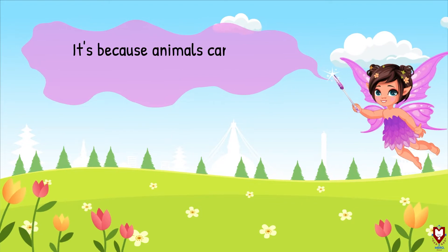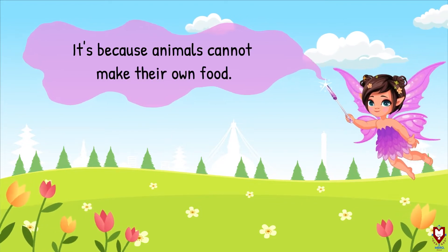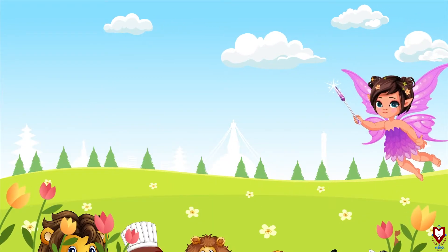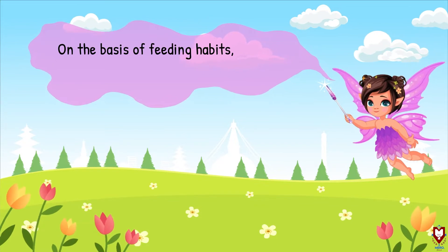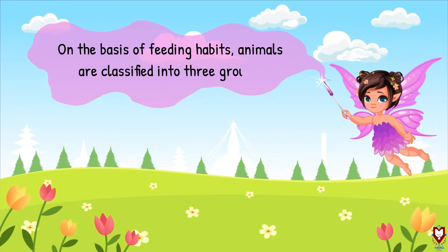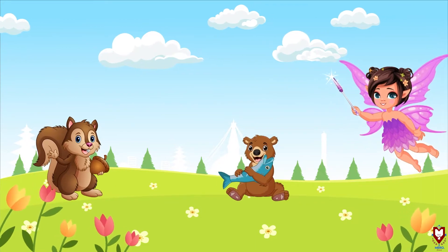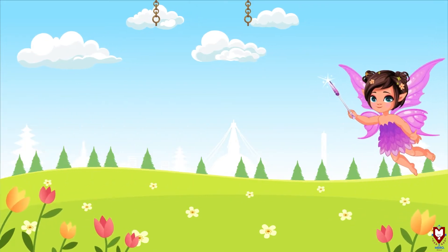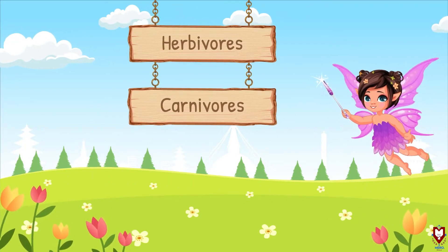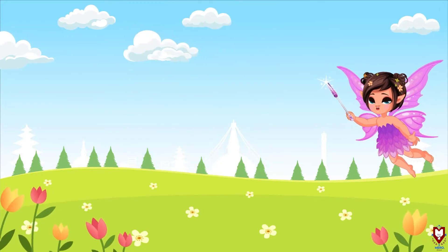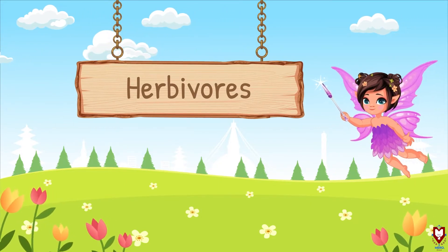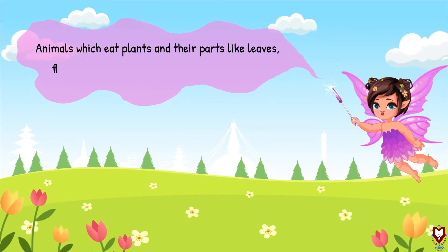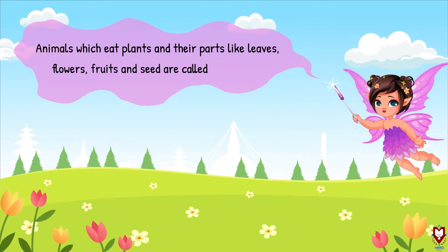All animals depend on other living beings for their food, because animals cannot make their own food. On the basis of feeding habits, animals are classified into three groups: herbivores, carnivores, and omnivores. First, let's learn about herbivores — animals which eat plants and their parts like leaves, flowers, fruits, and seeds are called herbivores.